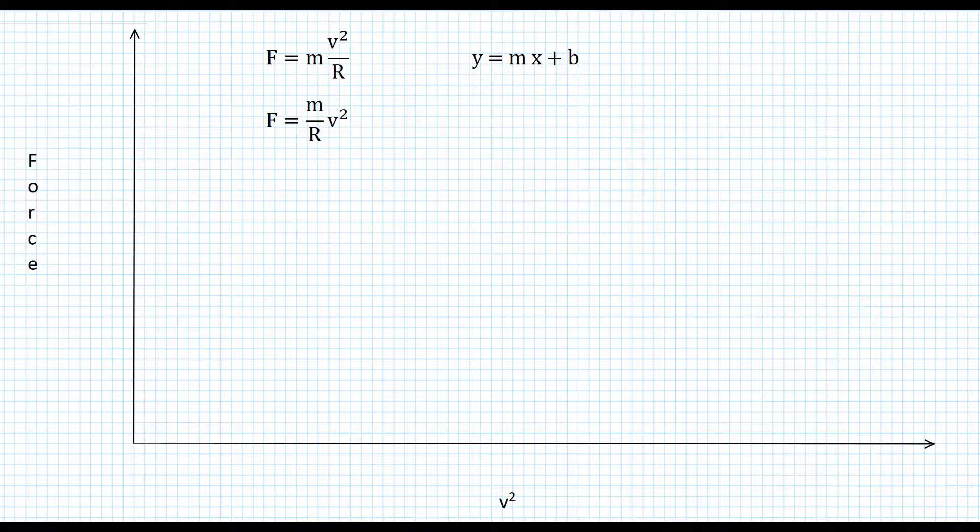The big difference here is that y is equal to mx and F is equal to something times v squared. But if I treat v squared as one quantity, instead of thinking of it as v and squaring it, I just think of it as v squared and plot v squared on the x-axis, then this takes the shape of the equation y equals mx plus b.